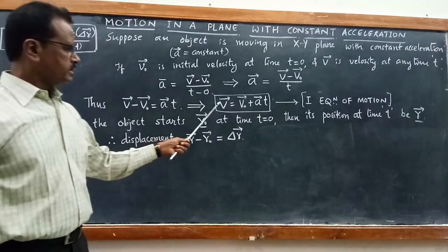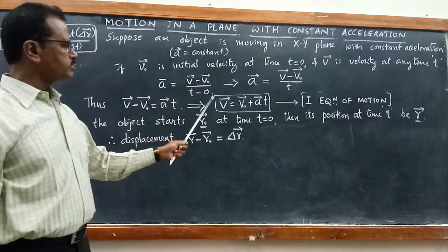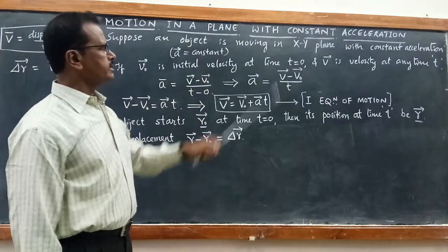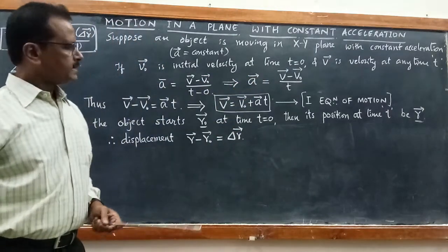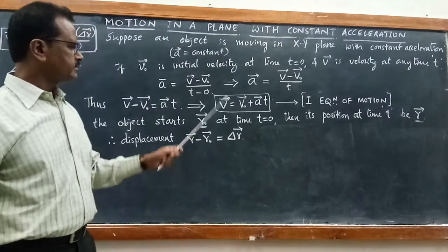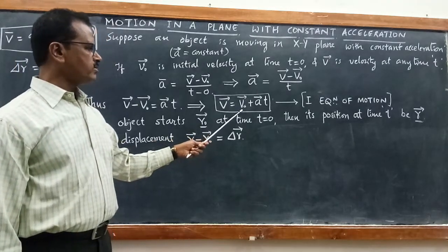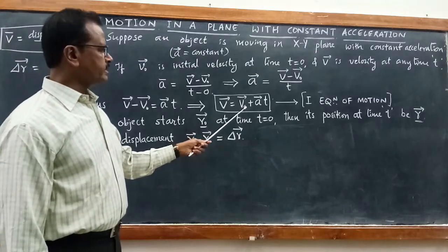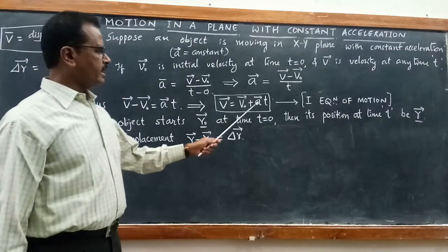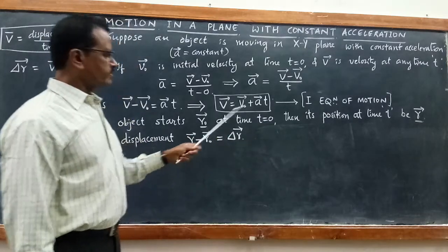In the previous case we did not use vector notation. Now we are using vectors, which have both magnitude and direction. Since it is motion on the XY plane, vector v has an x-component vₓ and y-component vᵧ. Similarly, v₀ has components v₀ₓ and v₀ᵧ, and acceleration vector a has components aₓ and aᵧ.